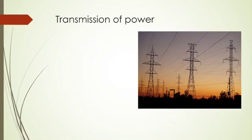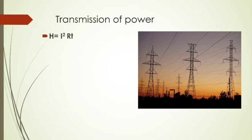Regarding the transmission of power: electrical energy generated at a station must be transmitted over long distances. To minimize transmission loss, we use the equation for heat H equal to I squared RT. Since heat loss is proportional to the square of the current, we must maximize the reduction of current to minimize heat energy loss.